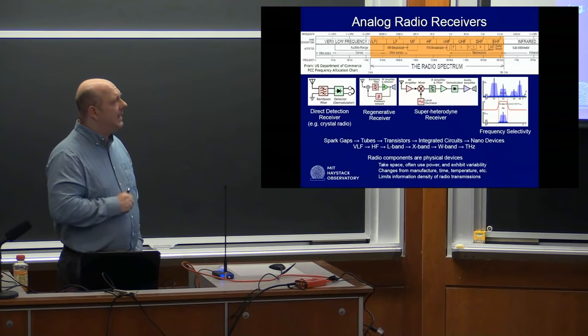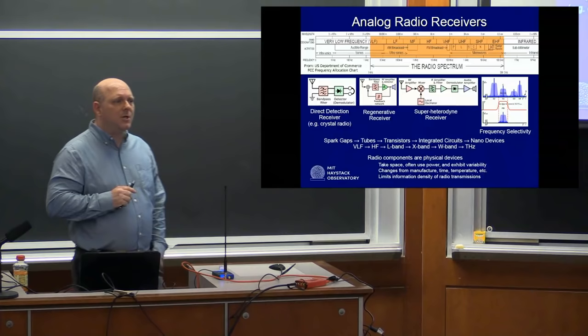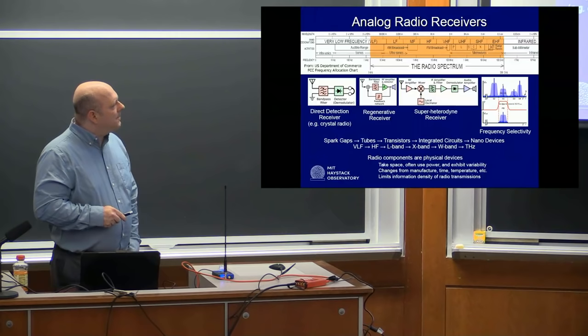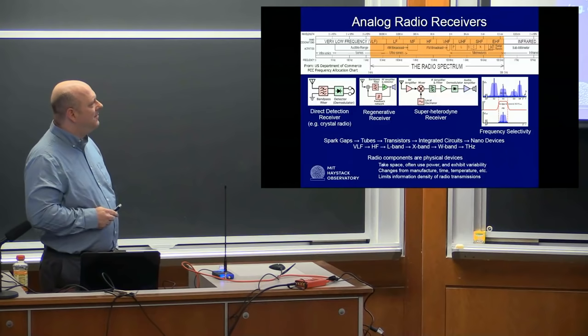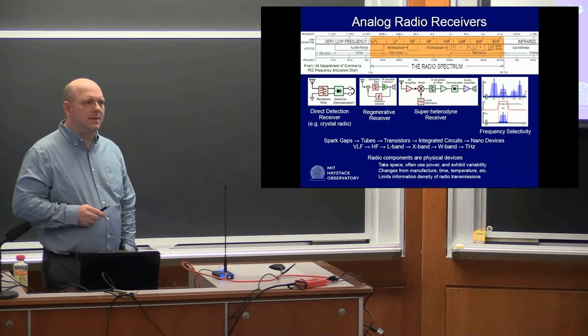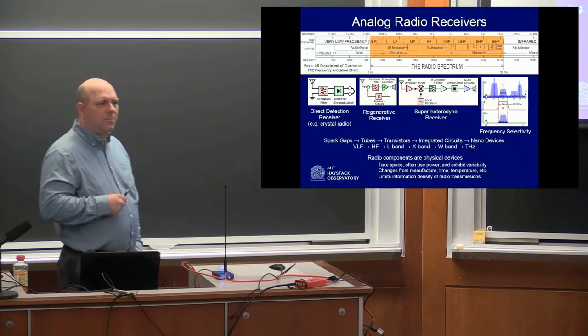With the superheterodyne, you use the local oscillator to select a band of frequency, then put it through audio detection and amplification. You can make these more complex: multistage superheterodynes, up-down converters. I've built many of these types of receivers over the years. We often use them to limit the complexity of the digital receivers — limit the bandwidth and improve the selectivity of a digital system by adding an analog system in front with better performance characteristics for the particular task.